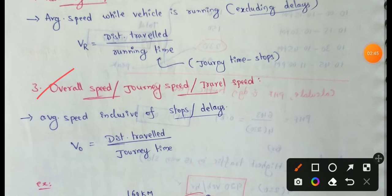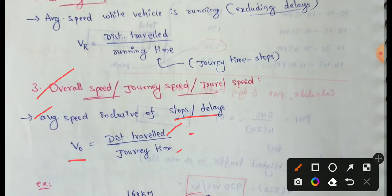Next is overall speed, also called journey speed or travel speed. It is the average speed inclusive of all delays and stops. Overall speed equals distance travelled divided by journey time.